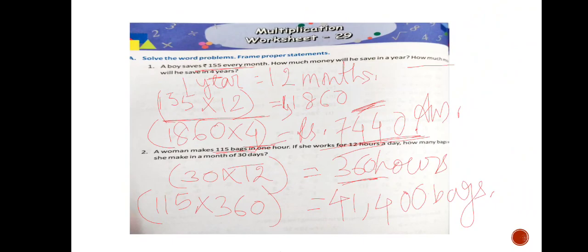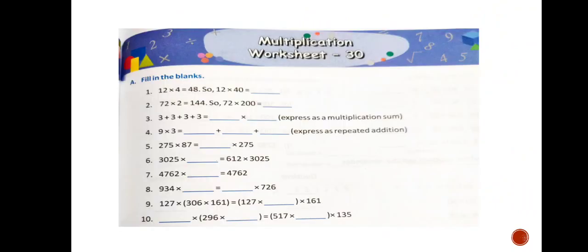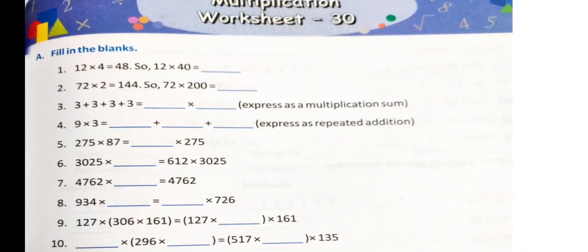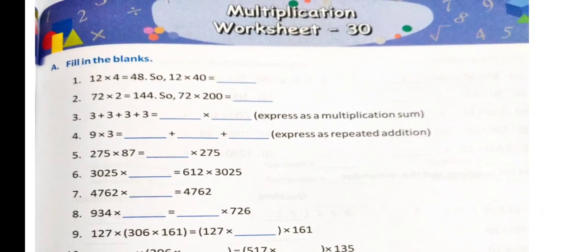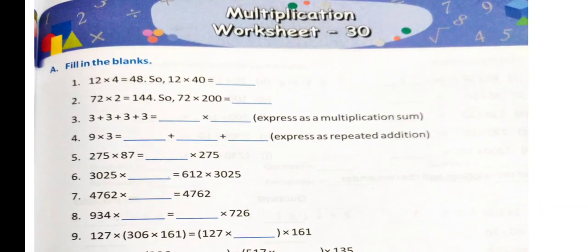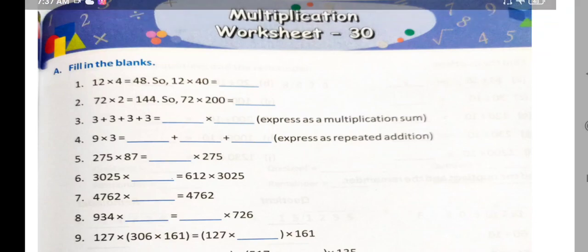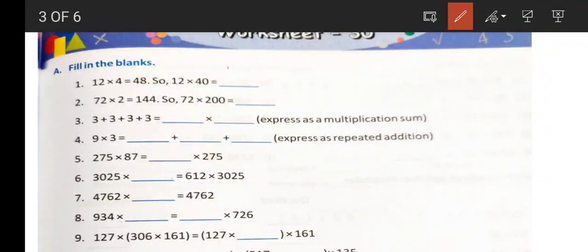This is the way we have to do it. 12 times 30 equals 360, so we multiply 115 by 360.